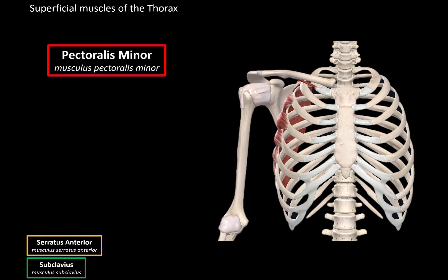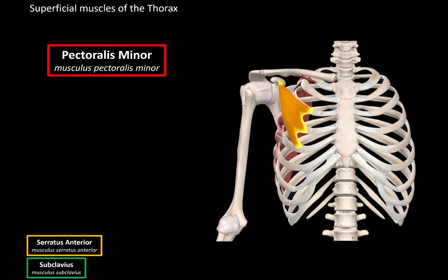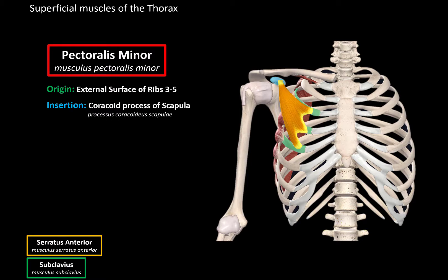Next is the pectoralis minor, located here. It originates from the external surface of the third to the fifth rib, and it inserts at the coracoid process of the scapula. When they contract, they pull the shoulders down and medially. Stiffness in this muscle can harm your posture by pulling your shoulder forward, so make sure you stretch this muscle whenever you can.